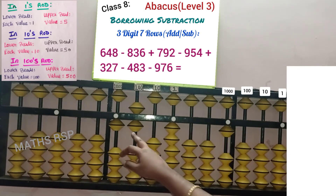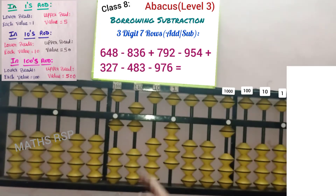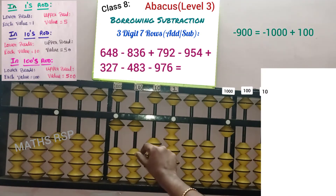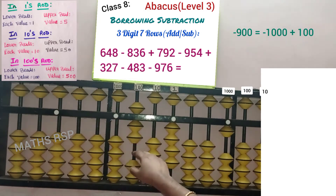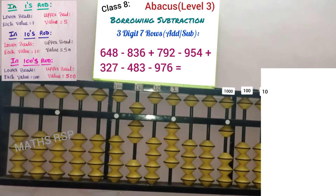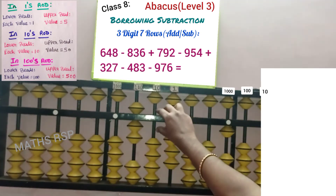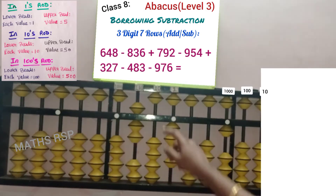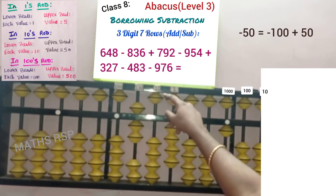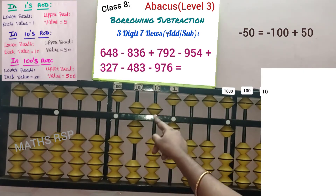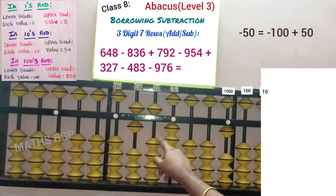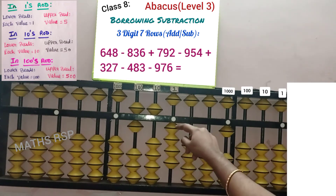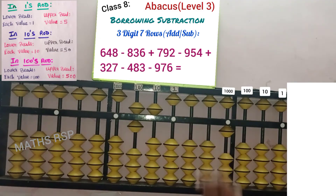Next, 4th row: minus 954. Here only 6 beads are available to remove, hence apply big friend. 9's big friend is 1, so we should add 1 in the 100 strad and remove the bars in the next strad — minus 1000 plus 100 is equal to minus 900 completed. Next, remove 5 beads from the 10 strad; no beads are available, so apply big friend for minus 5. Add 5's big friend 5 here and remove the bars in the next strad. Minus 100 plus 50 is equal to minus 50 completed. Next, do minus 4 in the 1 strad; beads are available, so do minus 4 directly.